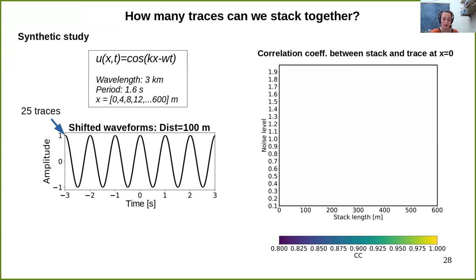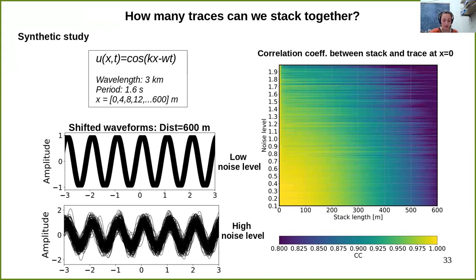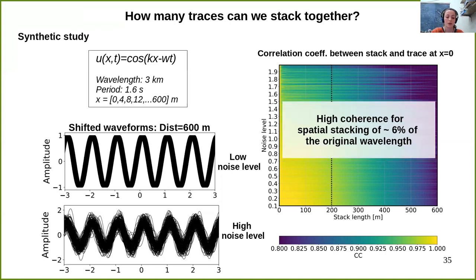Focusing on very low noise levels: if we stack up to 25 traces — 100 meters in space — we obtain very high correlation coefficients. However, the values decrease the more traces or meters in space are stacked. As noise level increases further, the yellow region representing very high correlation coefficients shifts towards shorter stack lengths, meaning the higher the noise level, the fewer traces can be stacked together. To summarize, assuming a relatively low noise level, we obtain high correlation coefficients for a stack length of up to 200 meters, corresponding to 6.6% of the original wavelength. We use this value as an orientation for our further analysis.